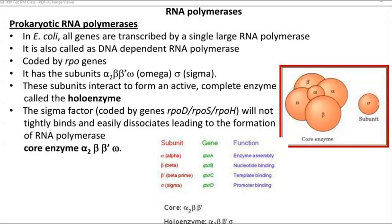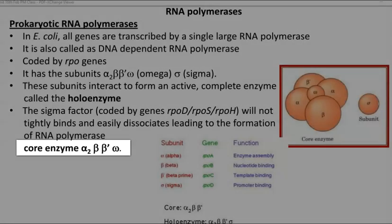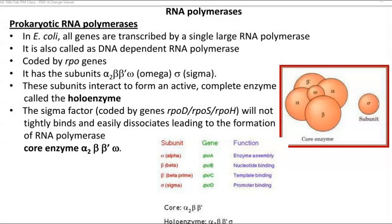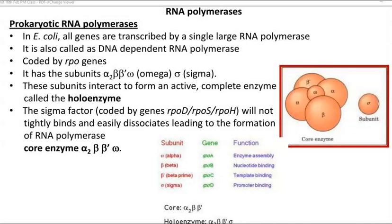It is divided into two forms: the core enzyme and the holo enzyme. The core enzyme has two alpha subunits, one beta, one beta dash, and one omega subunit, as shown on the right-hand side. When a sigma subunit joins, it forms the holo enzyme, which performs the role of transcription.